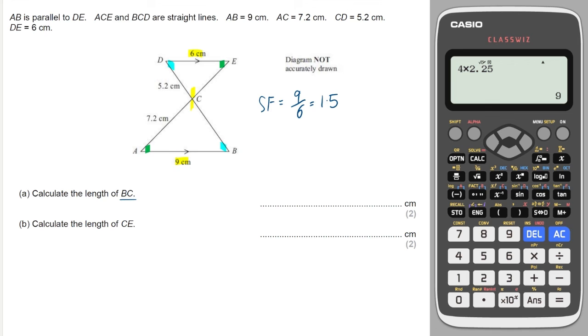I'm looking for BC to start with. BC is the side opposite the green. So the side opposite the green here is 5.2. So I'll do 5.2 multiplied by 1.5, and that gives me 7.8. Then I'm asked for CE. CE is this side here, which is opposite the blue. On the larger shape, the side opposite the blue is 7.2. So to get to the smaller shape, I'll do 7.2 divided by 1.5, and this will give me an answer of 4.8.